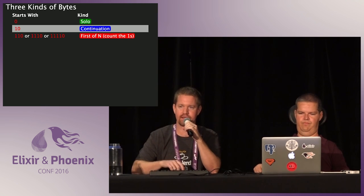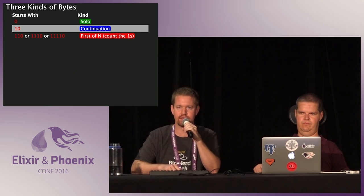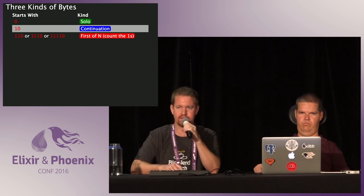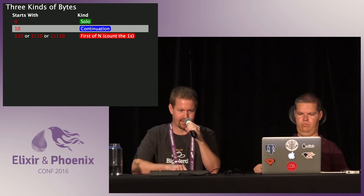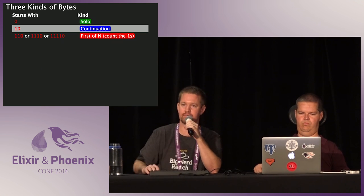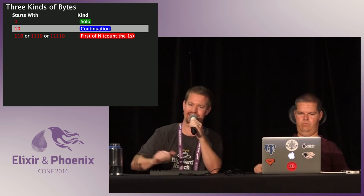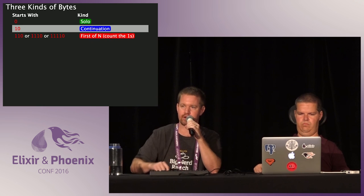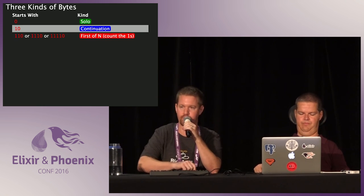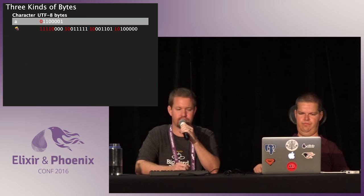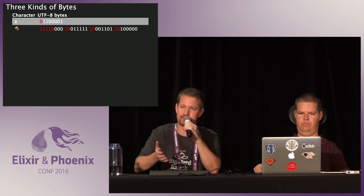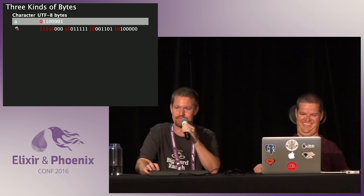There are three kinds of bytes in UTF-8. There's a solo byte — like ASCII characters such as A — where the first bit is always zero, making UTF-8 backwards compatible with ASCII. There are continuation bytes, where any byte starting with `10` says it's following after another one. And then there are first-of-N bytes: starting with `110` means it's a two-byte sequence; `1110` means it's a three-byte sequence. So the letter A is a solo byte, while the roasted sweet potato emoji begins with a four-byte header followed by three continuation bytes.